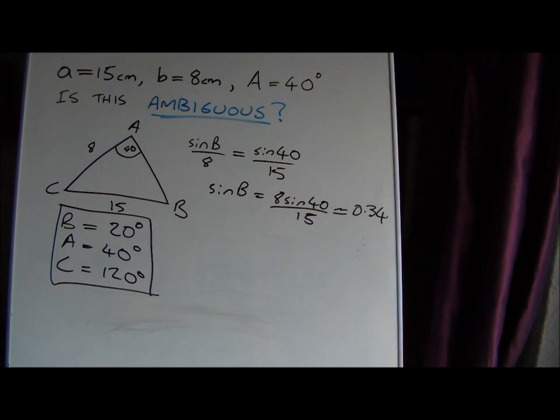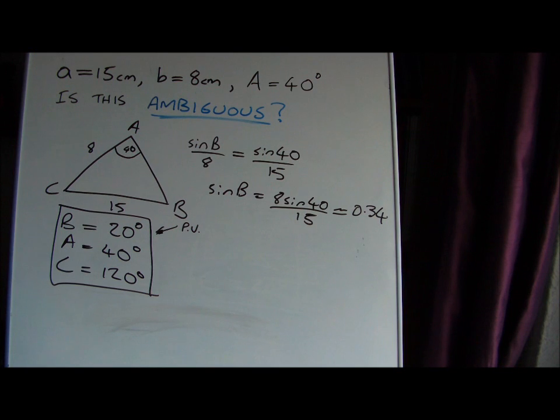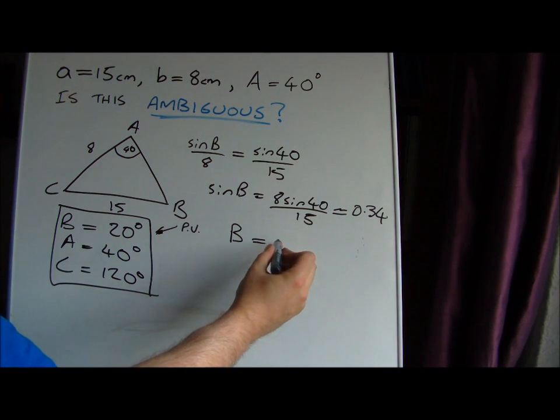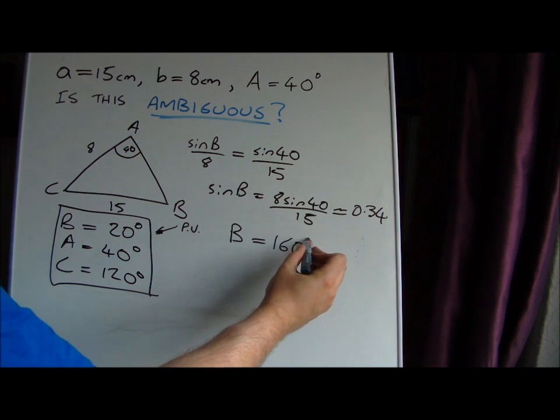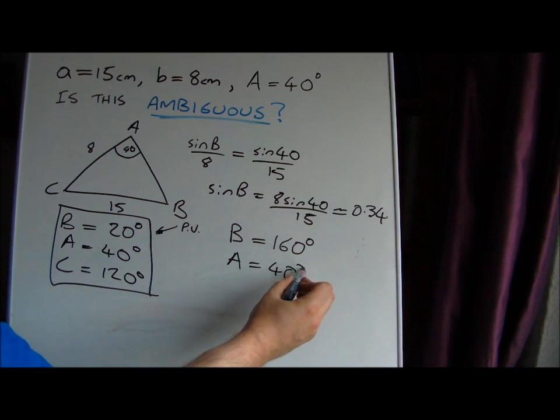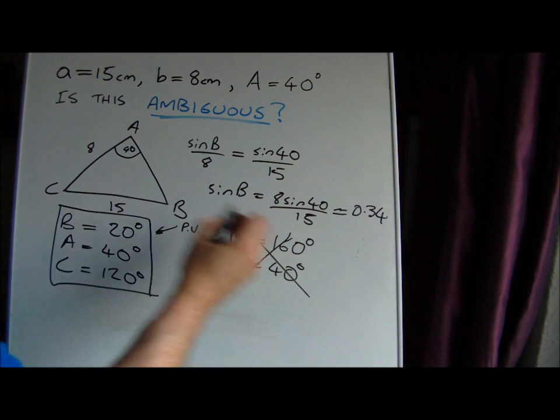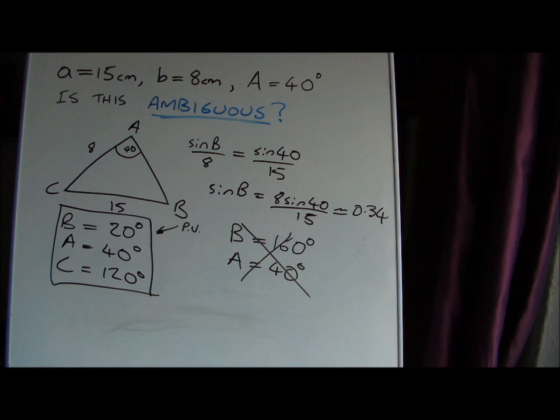Let's see if we can calculate another triangle. This was the principal value, so we should try the secondary value. The secondary value is 180 degrees minus the principal value, so a second possible angle is B is 160 degrees. Now we already are given angle A is 40 degrees, and immediately we see that we're now up to an angle sum of 200 degrees, which is impossible for a triangle. So this is crazy, we can't have that. We can't even attempt to calculate C. So this contradiction has led us to the fact that there is only one solution for the triangle. This is a unique triangle.